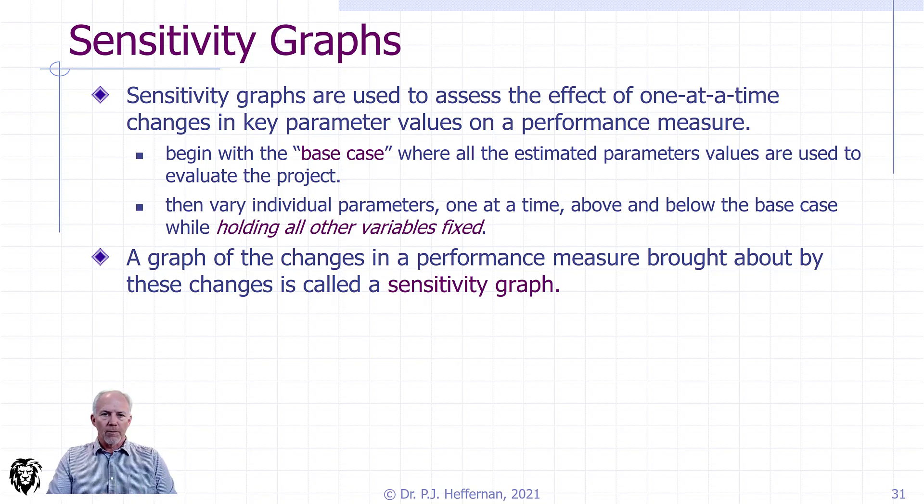What we need to do is while holding all of the other parameters constant, we're able to look at the one parameter that we want to check its sensitivity on, and we adjust it up and down by a percentage error, and recalculate our net present value or whatever parameter it is that we're using to evaluate. Then we can build that into a graph, which is called your sensitivity graph.